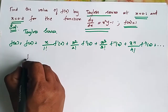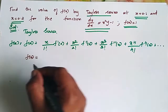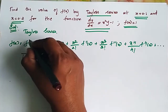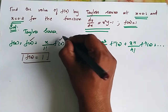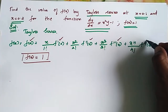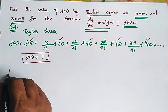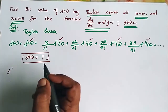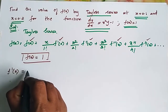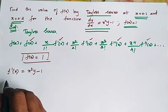F of 0 is equal to 1. Now we will find f dash of 0, f double dash of 0, f triple dash of 0, and f power 4 of 0. F dash of x is equal to x square y minus 1.